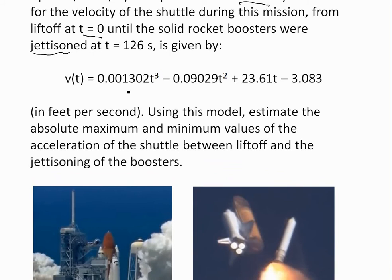given as v(t) = 0.001302t³ - 0.09029t² + 23.61t - 3.083. Now the question says using this model, estimate the absolute maximum and minimum values of the acceleration of the shuttle between liftoff and the jettisoning of the boosters. Remember, we're finding the acceleration, not the velocity, so we need to